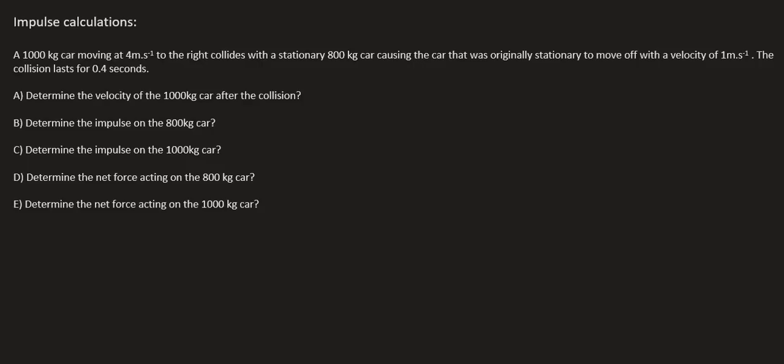In this question we have a 1000 kilogram car moving at 4 meters per second to the right, and it collides with a stationary 800 kilogram car, causing that car to move off with a velocity of 1 meter per second. The collision lasts for 0.4 seconds.